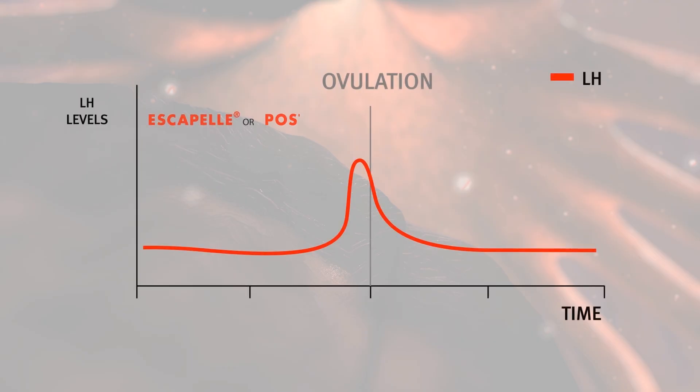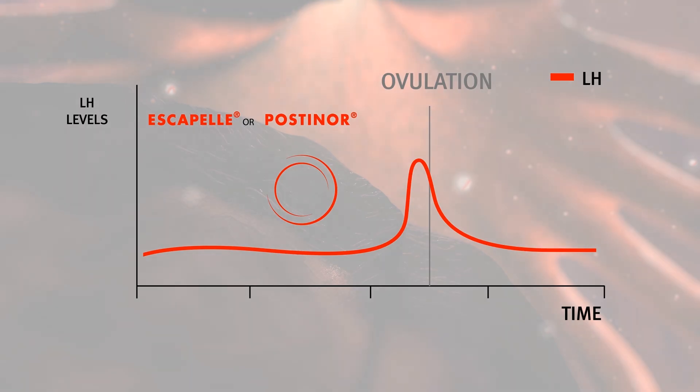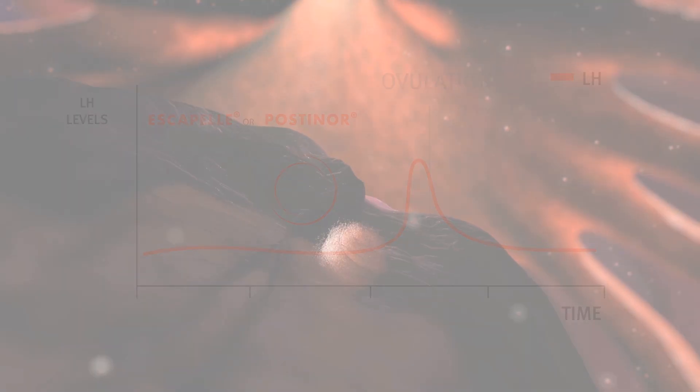Escapel and Postinor work the same way as regular contraceptive pills but after sex, as they delay or inhibit ovulation by delaying or inhibiting the elevation of the luteinizing hormone levels, this so-called LH surge.